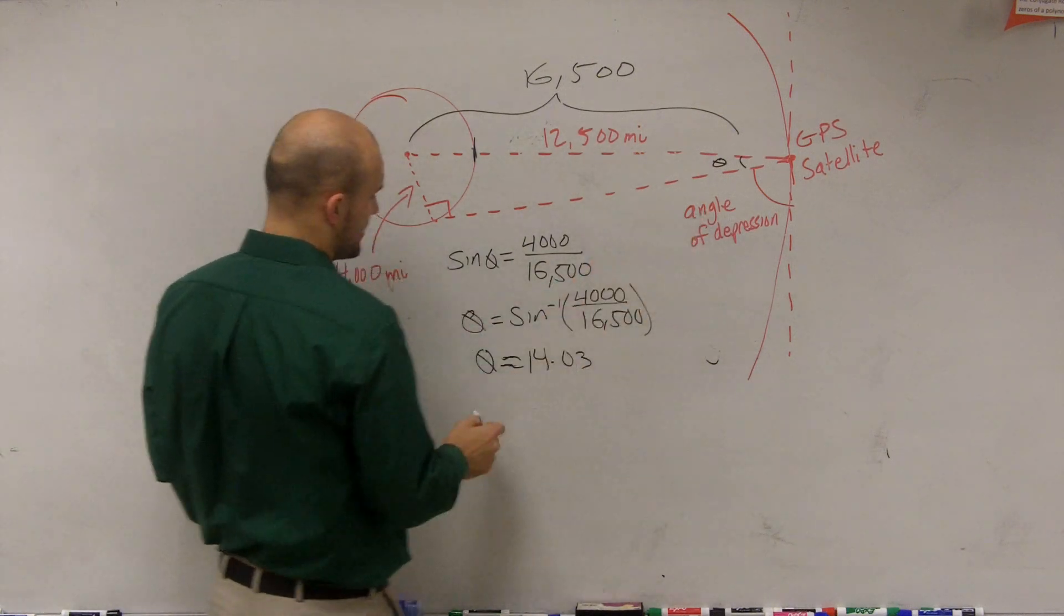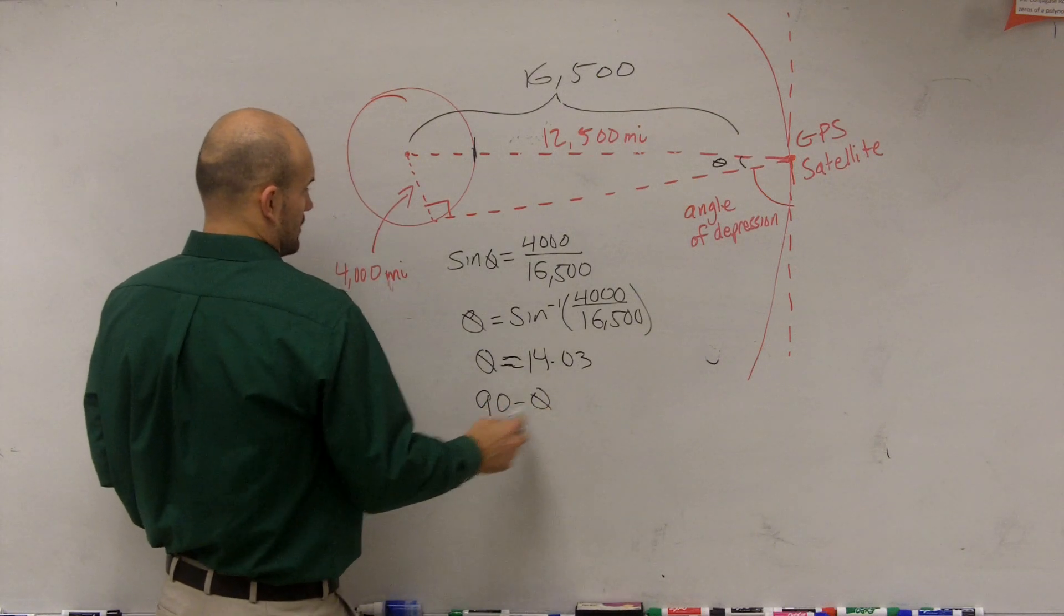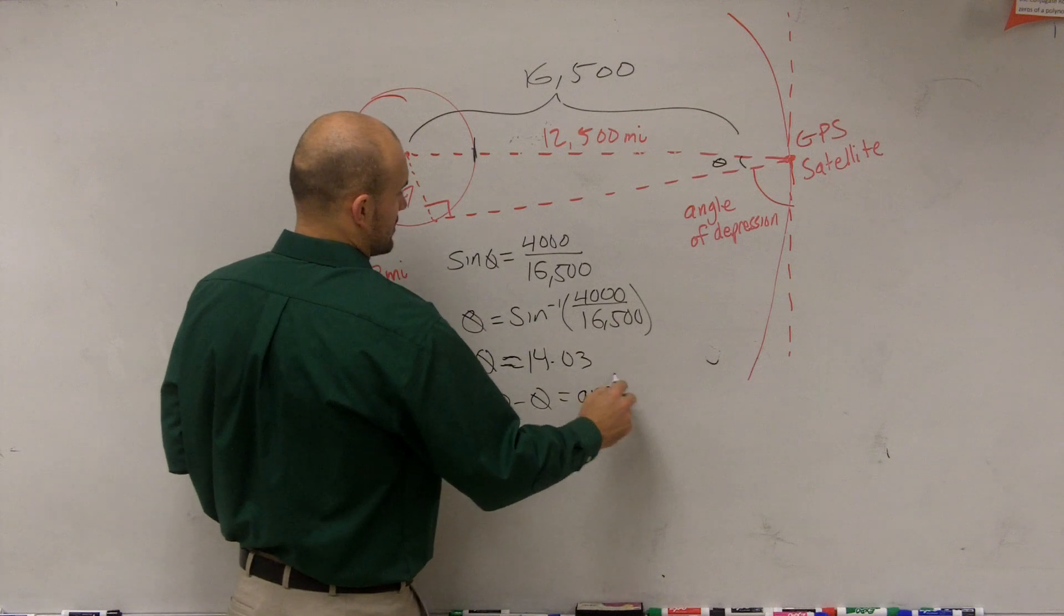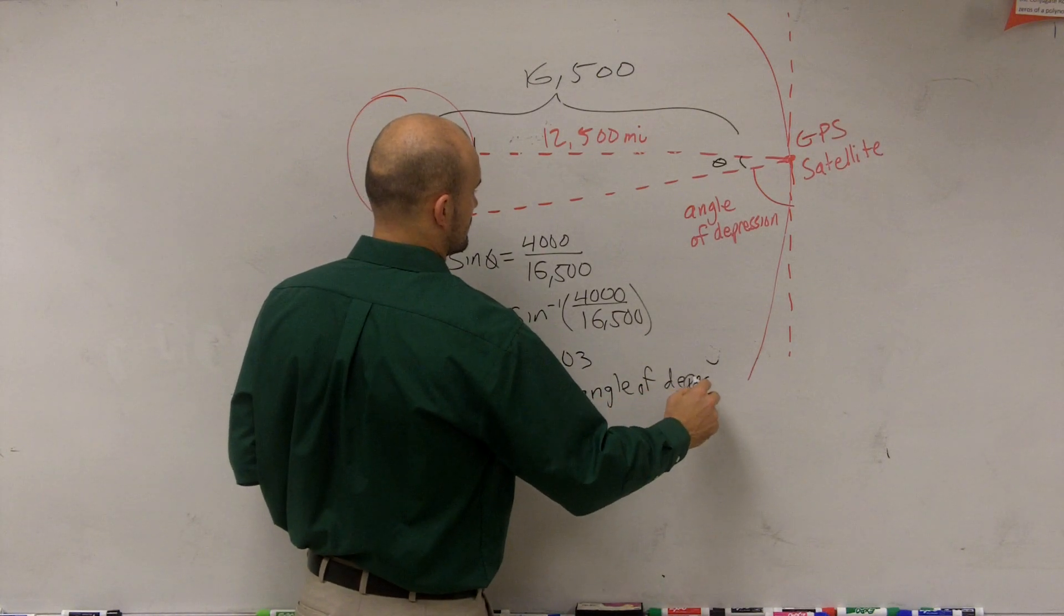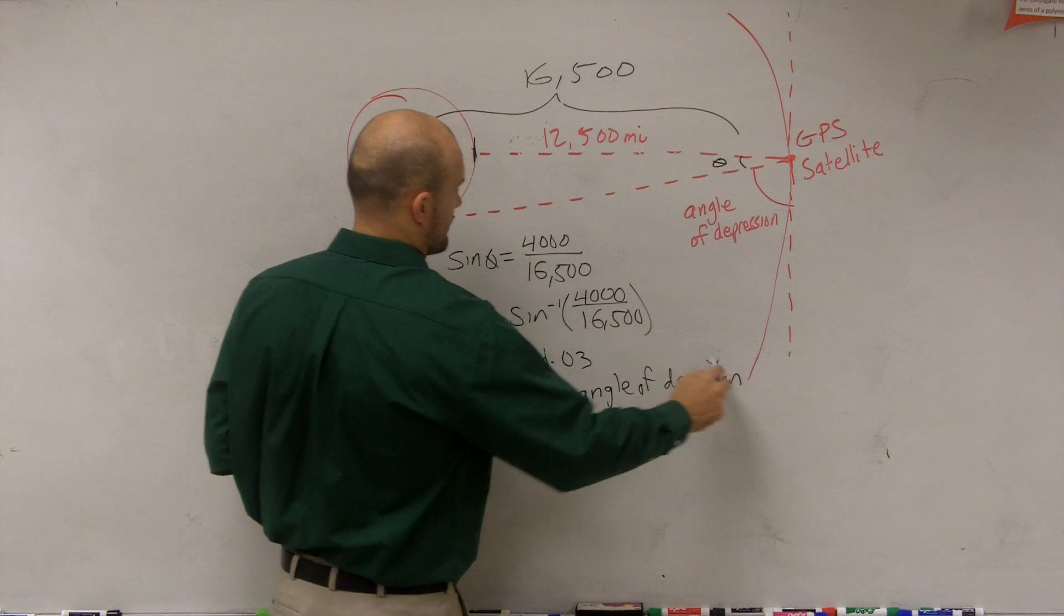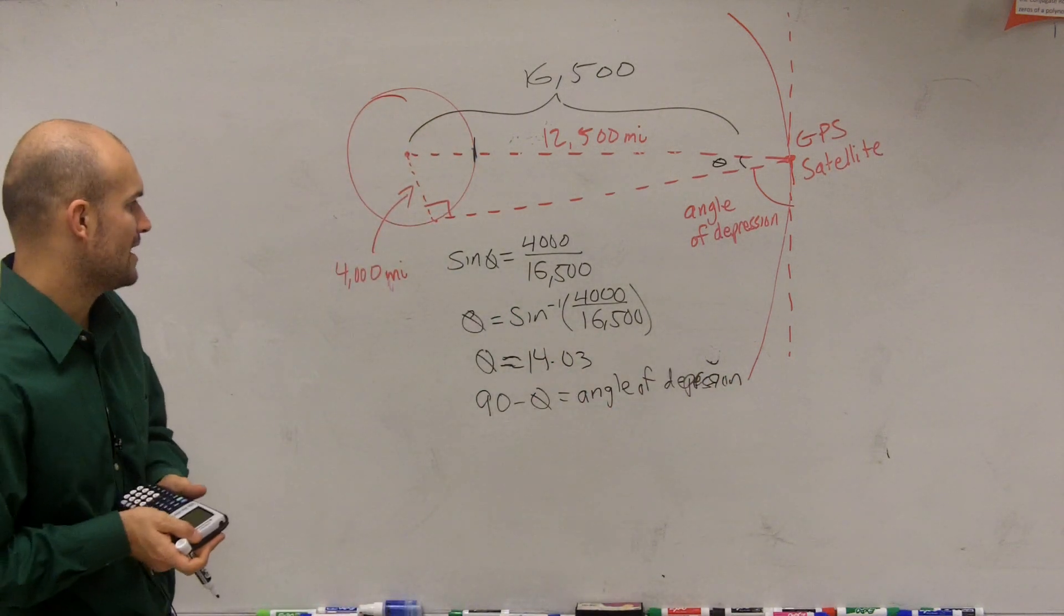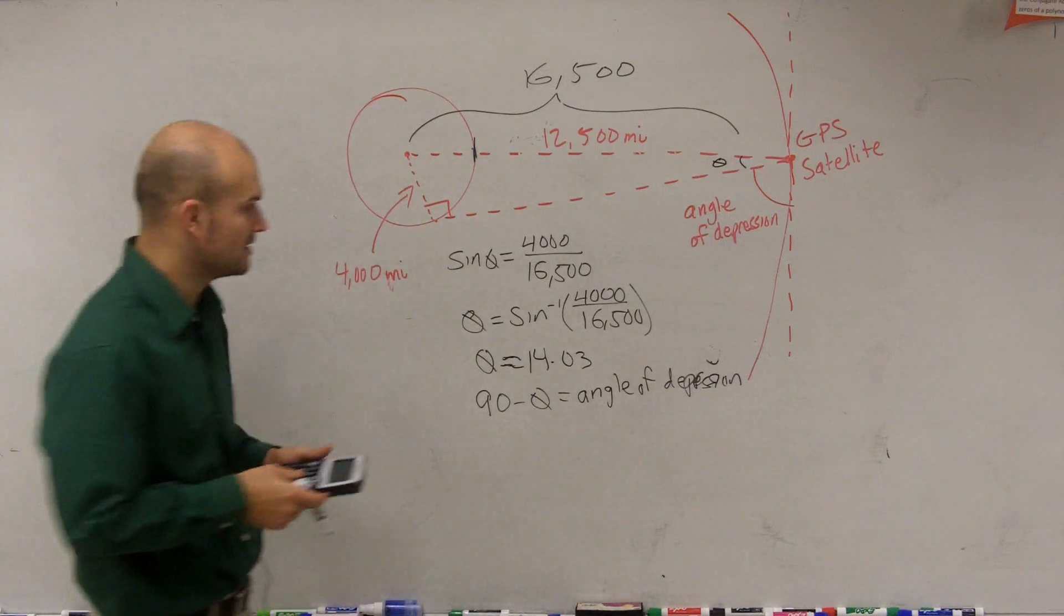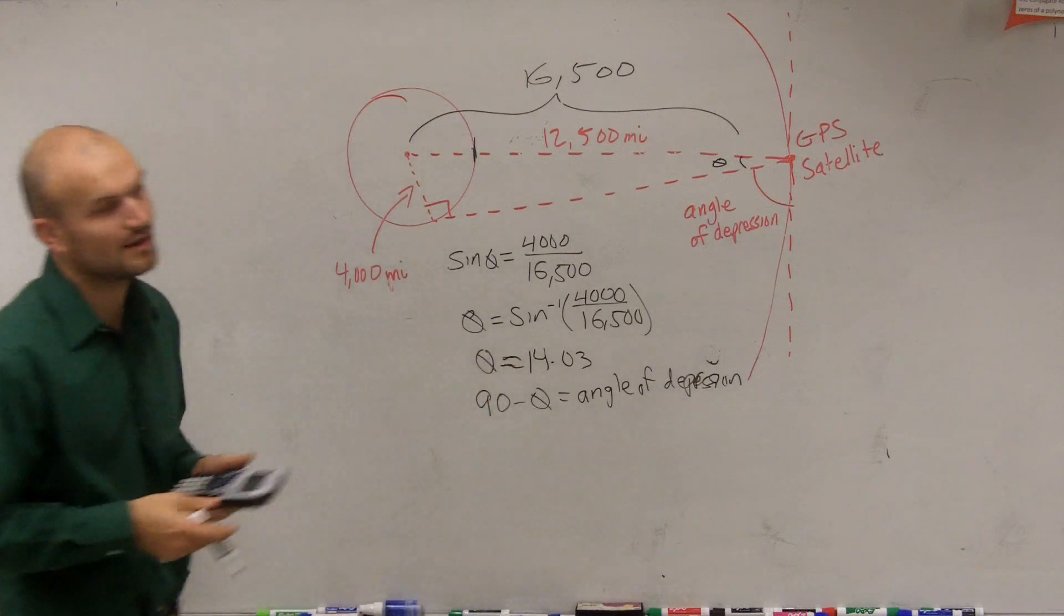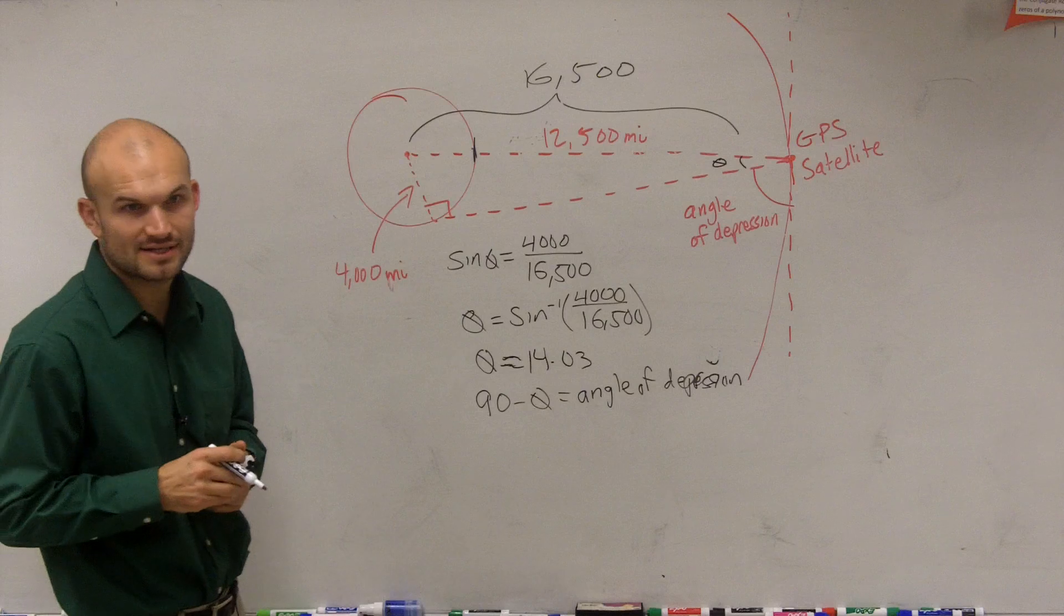Alright, therefore, now to find my angle of depression, I'm just going to do 90 minus theta equals angle of depression. And I'll make it really nice and sloppy. So therefore, I'm going to have 95, 97. I'm sorry, not 95. 75, 07. 75.97.